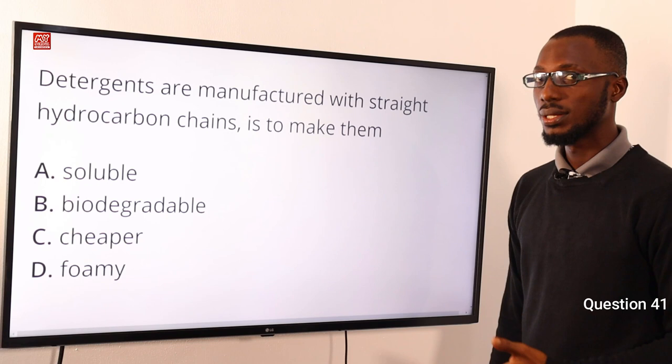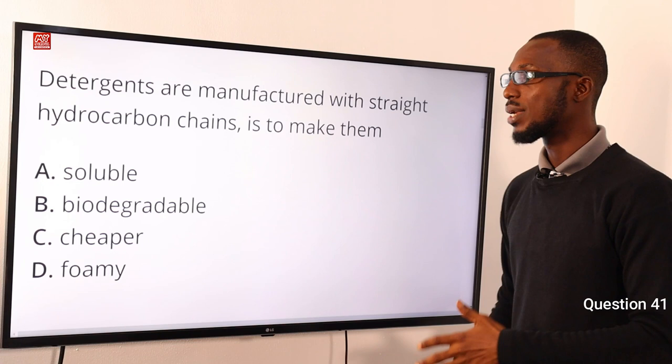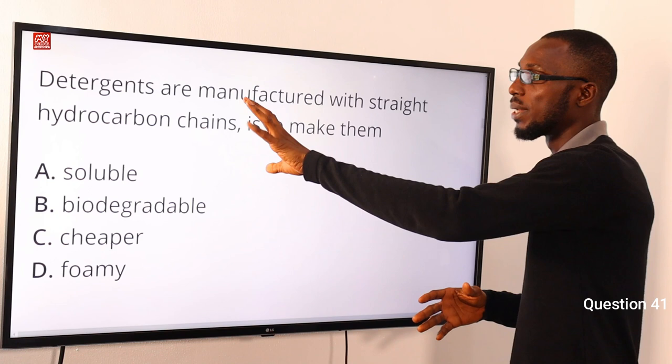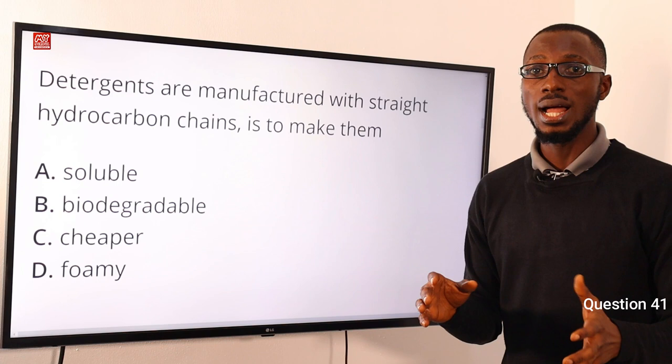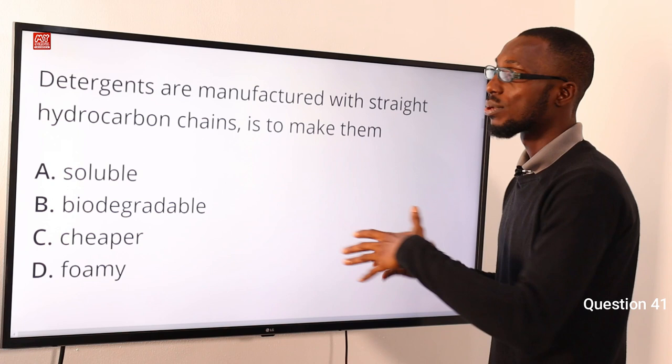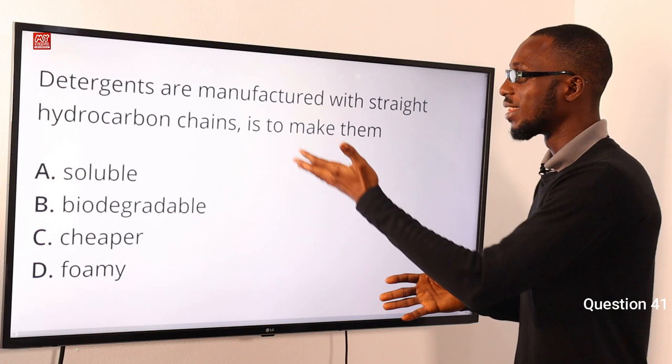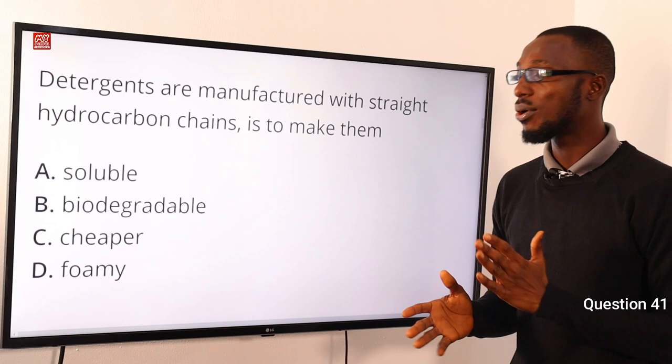Detergents are manufactured with straight hydrocarbon chains to make them biodegradable. Nowadays, the detergents being manufactured are biodegradable due to the presence of straight hydrocarbon chains. The solubility in water is due to their hydrophilic head, and the solubility in solvent or oil is due to their hydrocarbon tail. The correct option is option B — biodegradable.